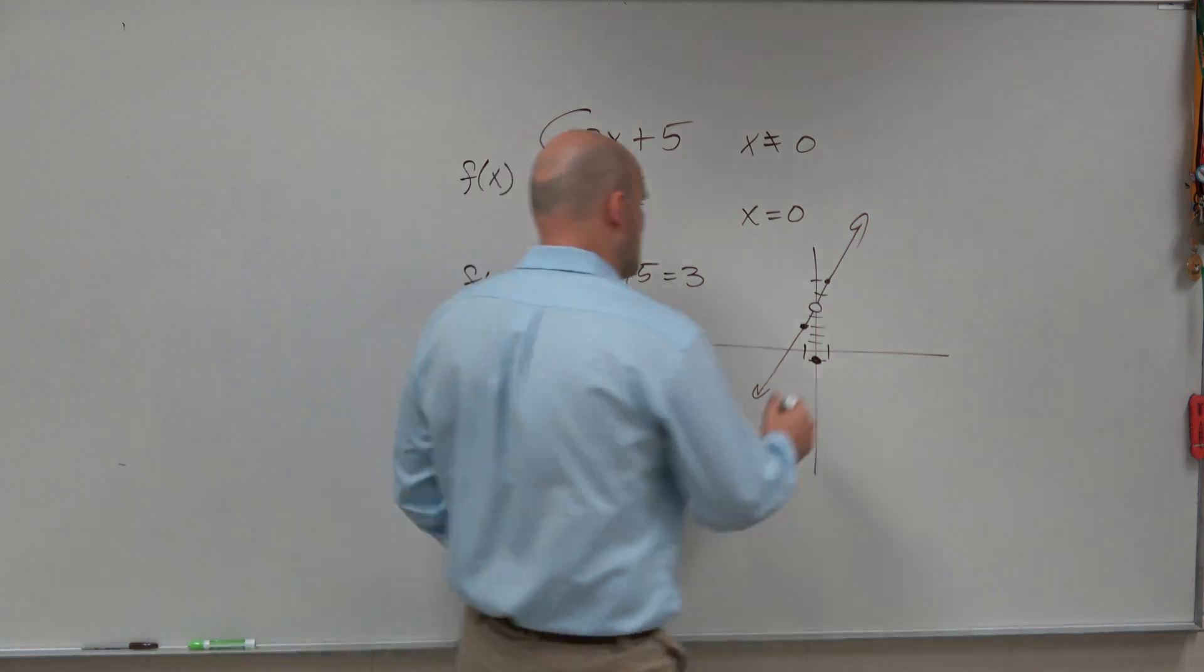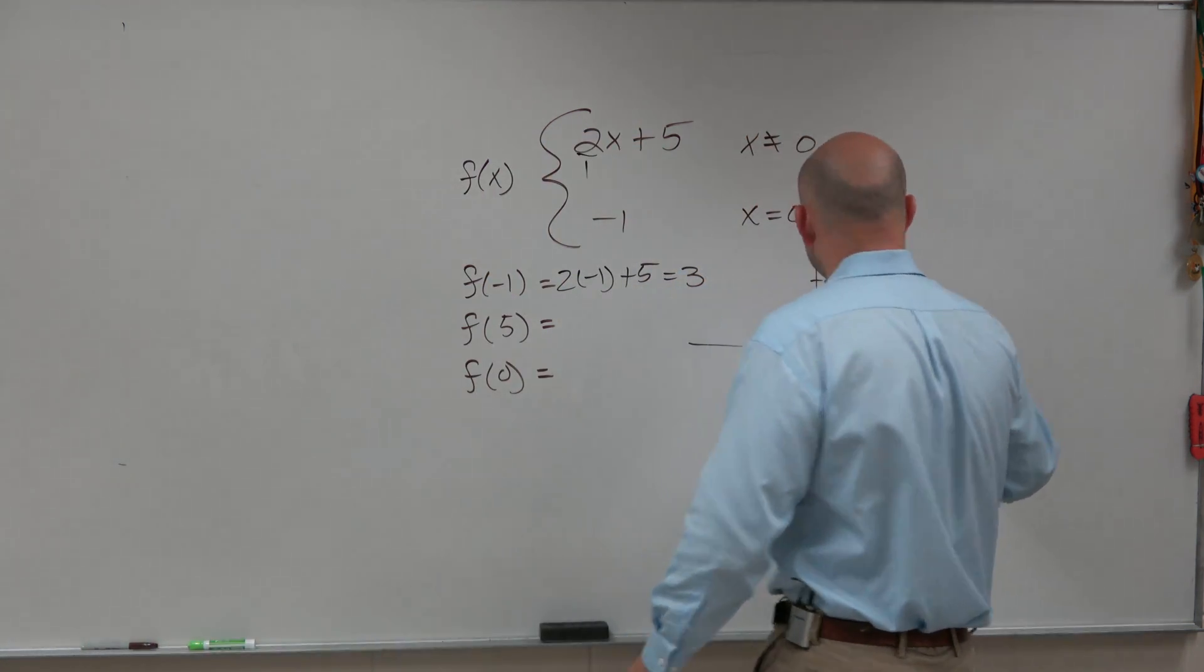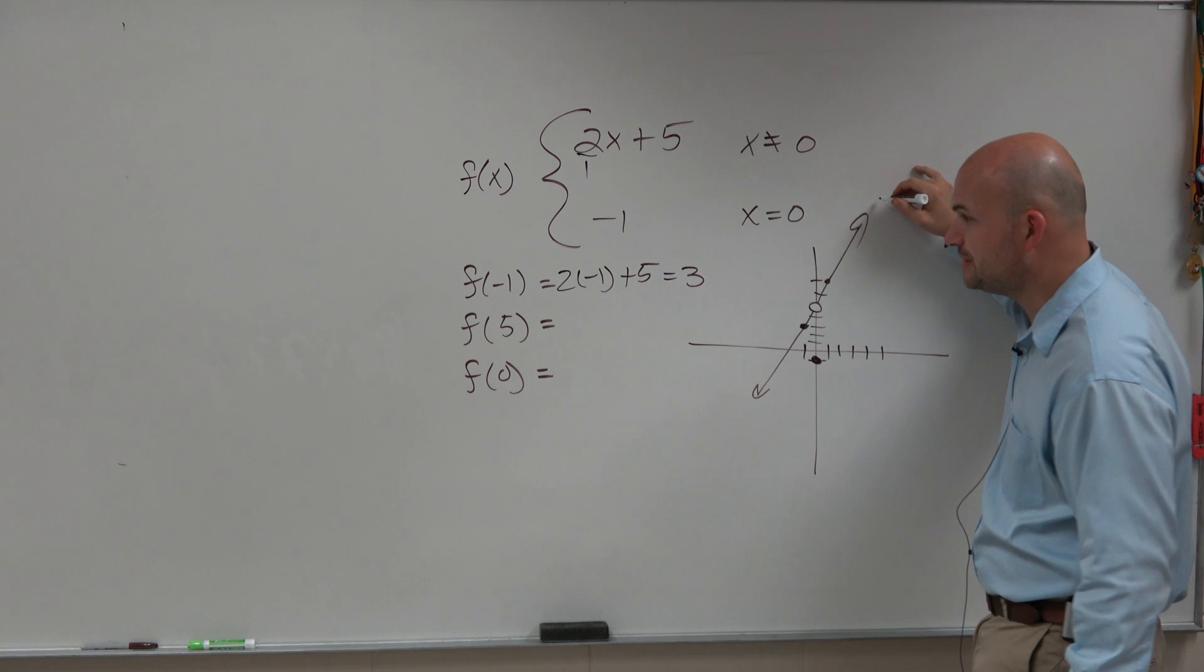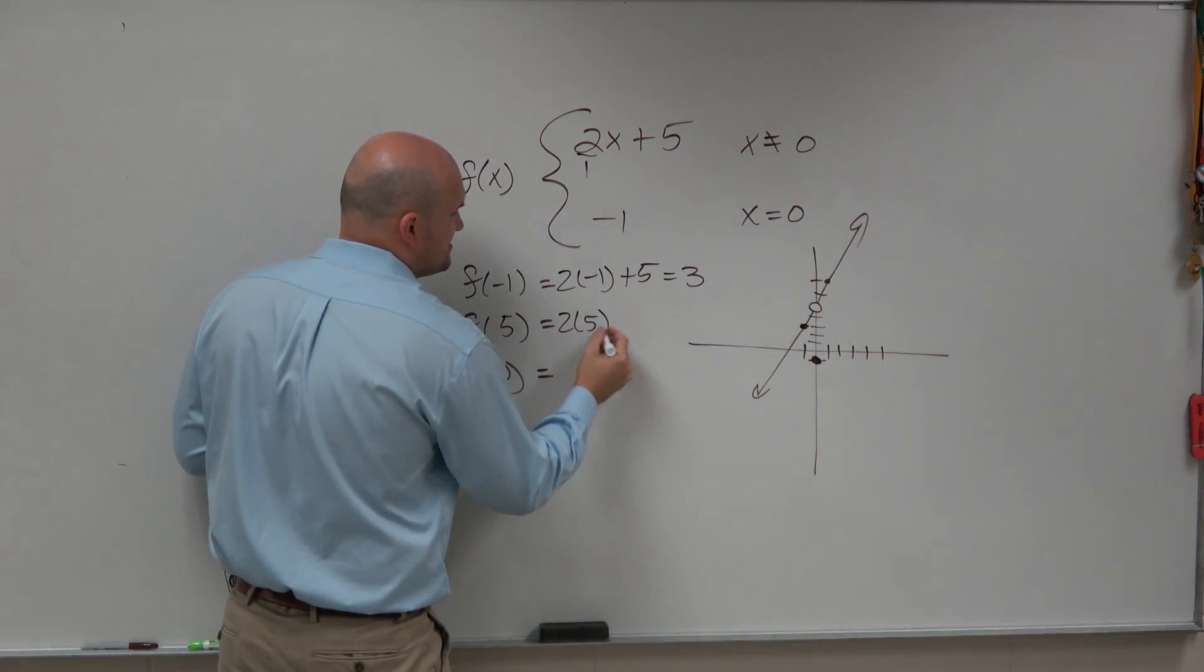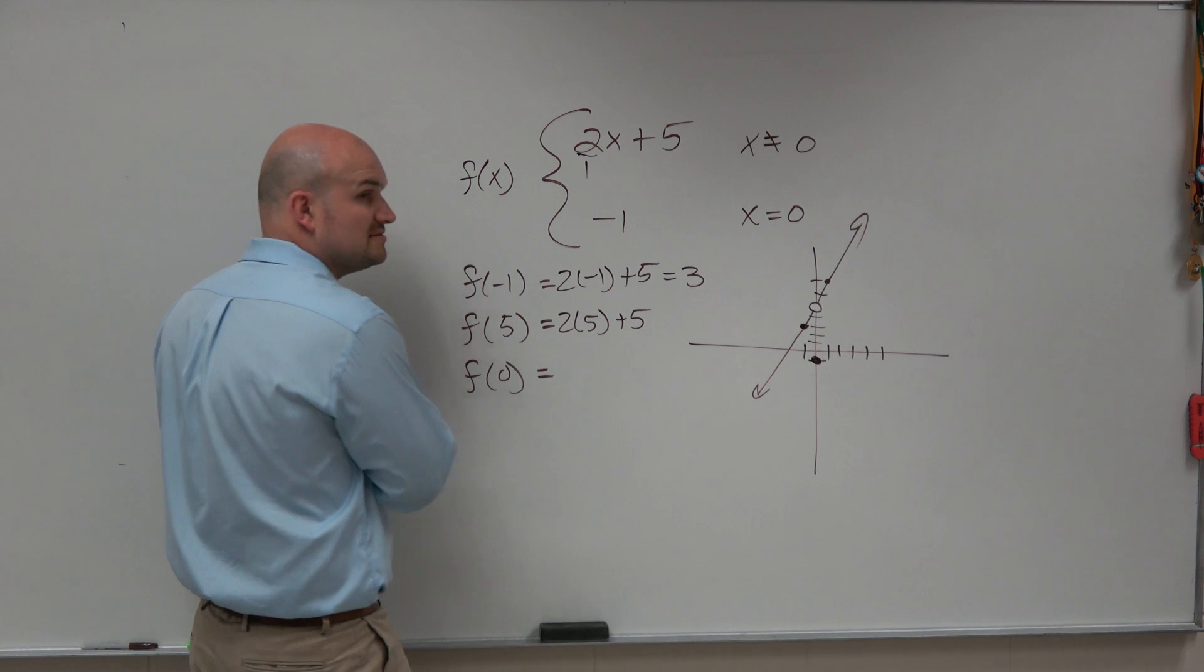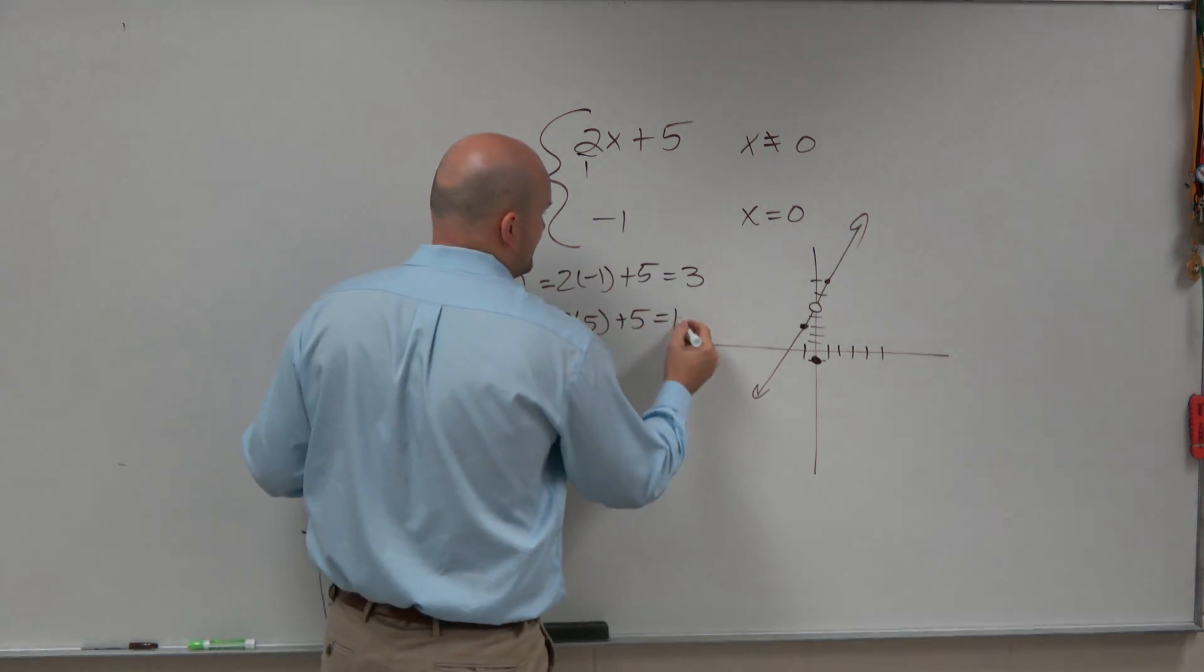If you want to do 5, well, 1, 2, 3, 4, 5. That might be a little too high off the graph for me to do. So the easy way to understand that would just be to multiply 2 times 5 plus 5. 2 times 5 is 10, plus 5 is equal to 15.